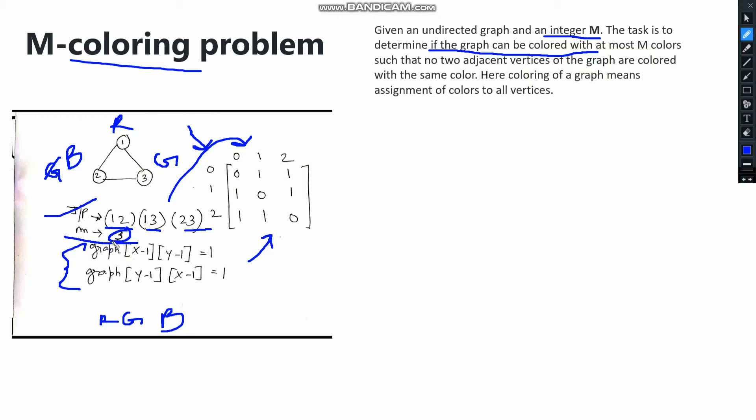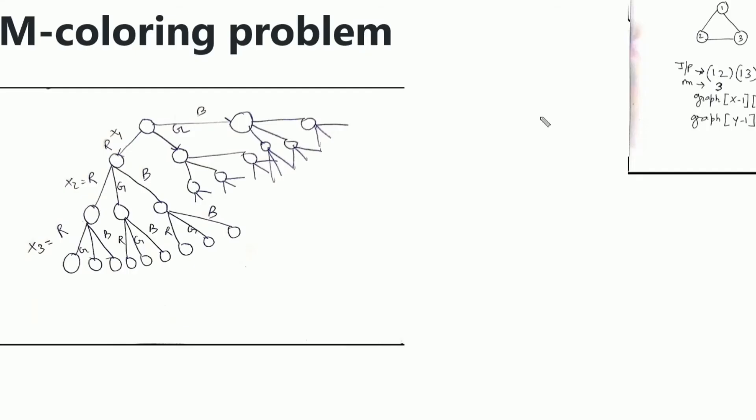If we use the naive approach with recursion, then for every vertex there are M choices available. Based on our choice we decide whether it is producing the desired output. Let's discuss the naive approach by making a recursive tree.